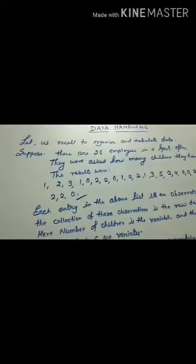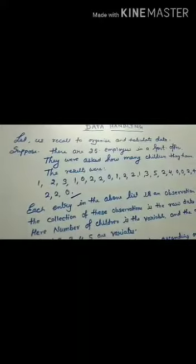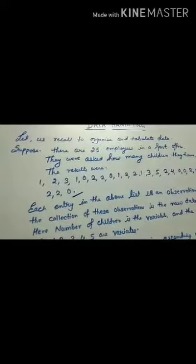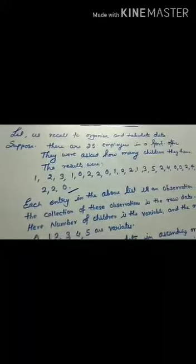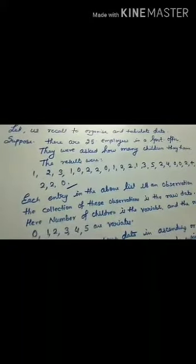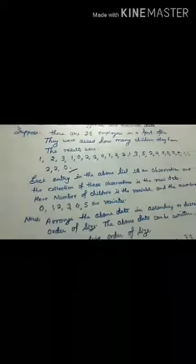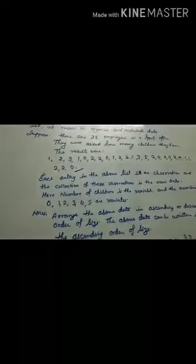First of all, suppose that there are 25 employees in a government office and they were asked how many children they have. The result is given. These 25 families, employees, provide the given data.